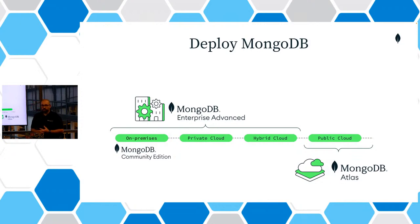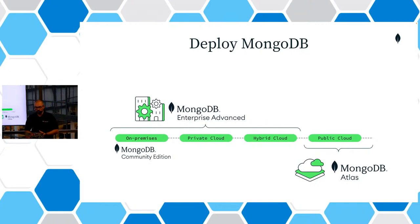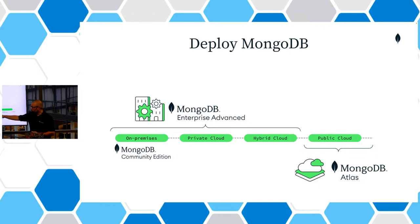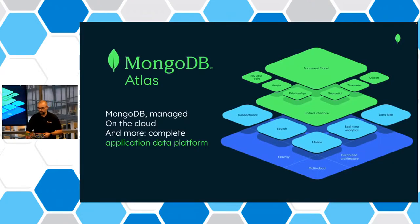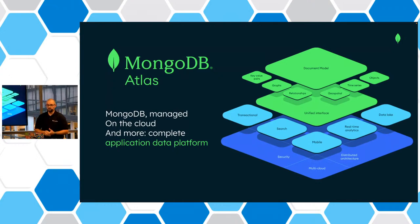MongoDB is available in multiple deployment options. MongoDB Enterprise Advanced allows self-managed, on-premise deployments — in your own data centers, on your own PC or laptop, in the private cloud, hybrid environment, or public cloud. You can also run it fully on the public cloud using a database-as-a-service called MongoDB Atlas. We also have the Community Edition of MongoDB, which is fully open source and free to use for anyone in any capacity.